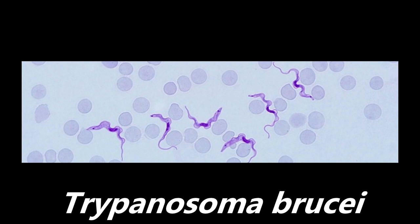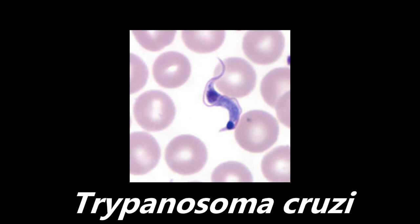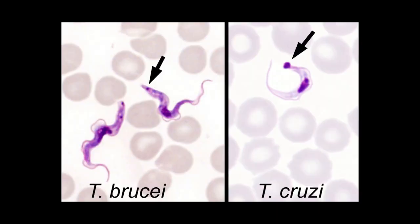Last video we talked about Treponema pallidum versus Leptospira. In this case, we also need to know Trypanosoma cruzi, which is the cause of Chagas disease — another trypomastigote seen on a peripheral blood smear. Here's a picture where we can differentiate: on the left is T. brucei, on the right is T. cruzi. The key differentiating feature is the kinetoplast — an organelle containing mitochondrial DNA. In T. cruzi, the kinetoplast is more peripheral and a lot larger compared to T. brucei. If you see these organisms on the exam, you should be able to identify them by the kinetoplast.